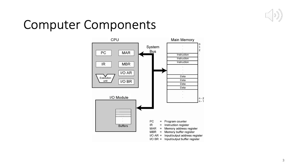Now on slide 3, 'Computer Components.' This is a top-level view of the various components of a computer. Central to a computer is the CPU, and within it you see various modules: a program counter, instruction register, memory address register, memory buffer register, and IO address and buffer registers.